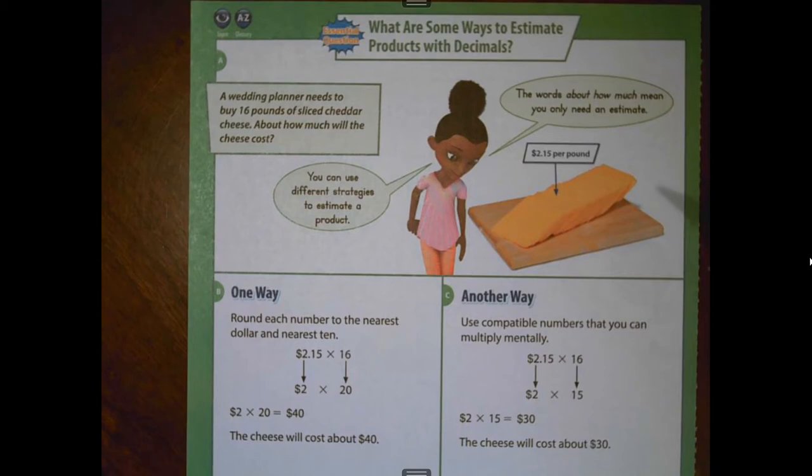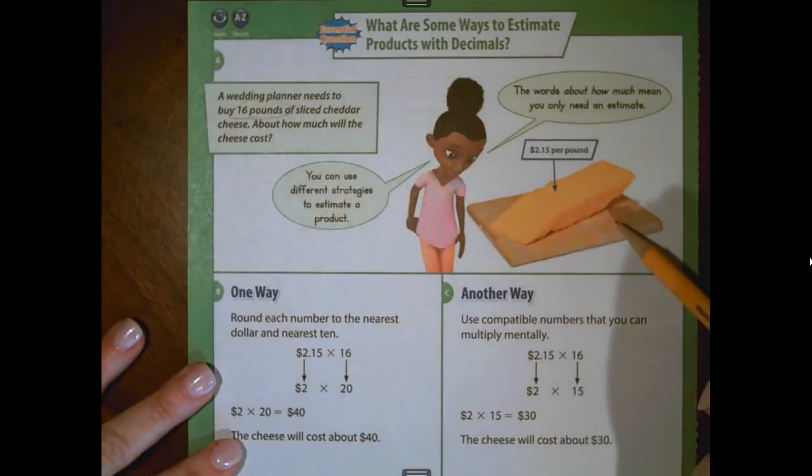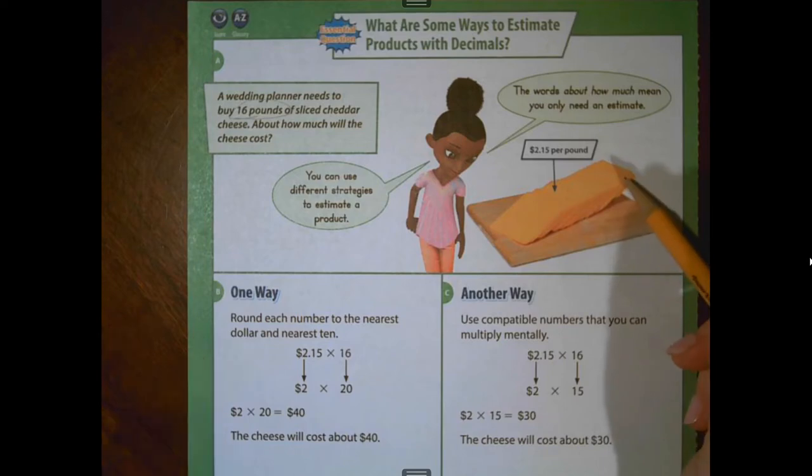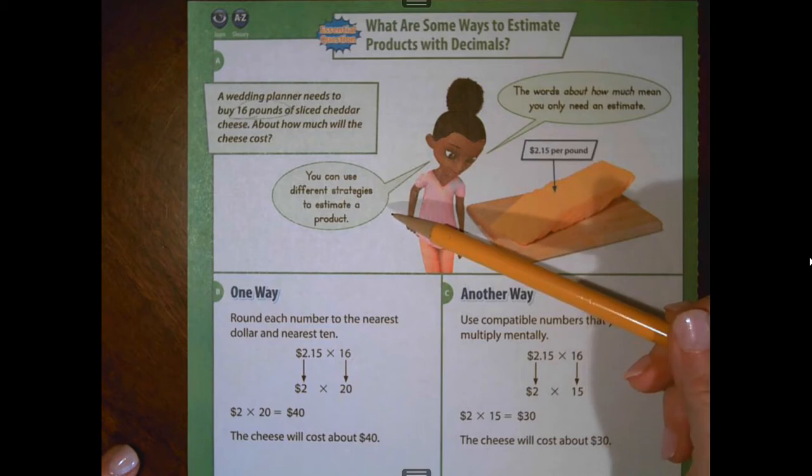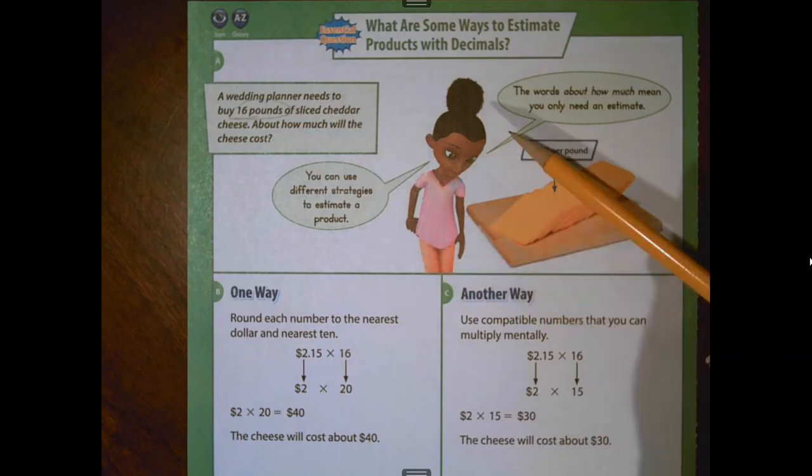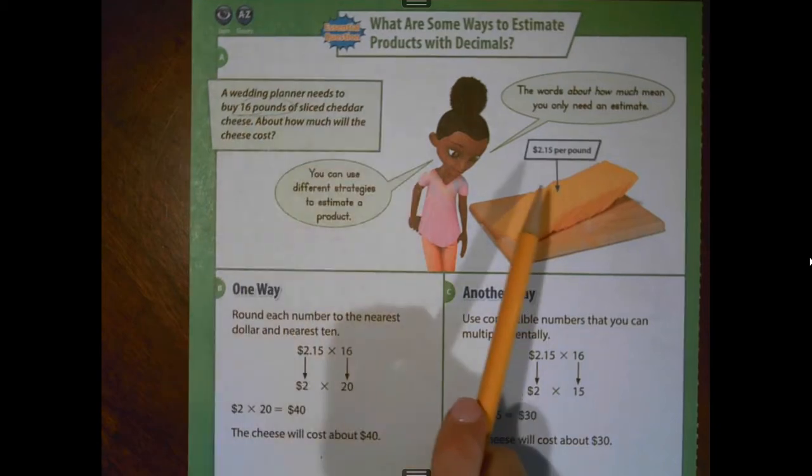A wedding planner needs to buy 16 pounds of sliced cheddar cheese. About how much will the cheese cost? So we need 16 pounds. My picture shows me that the unit price per pound is $2.15. Our fifth grade helper helps us think through this. She says that you can use different strategies to estimate a product and that the words about how much mean that we only need an estimate.